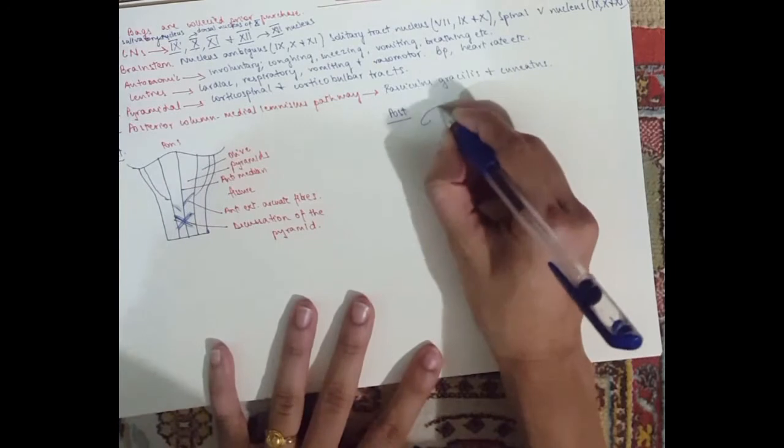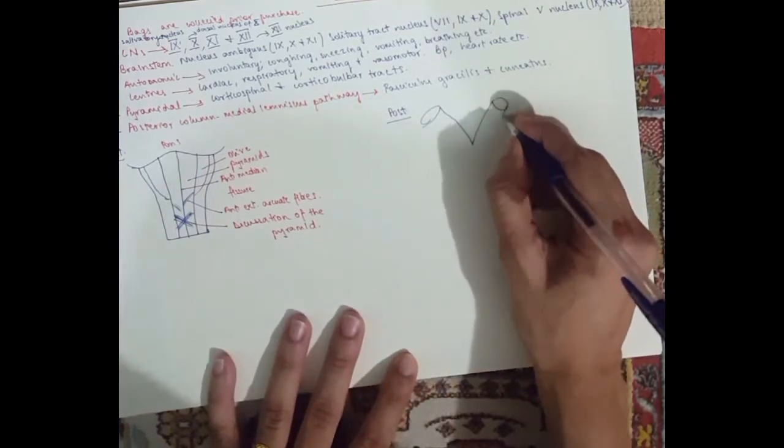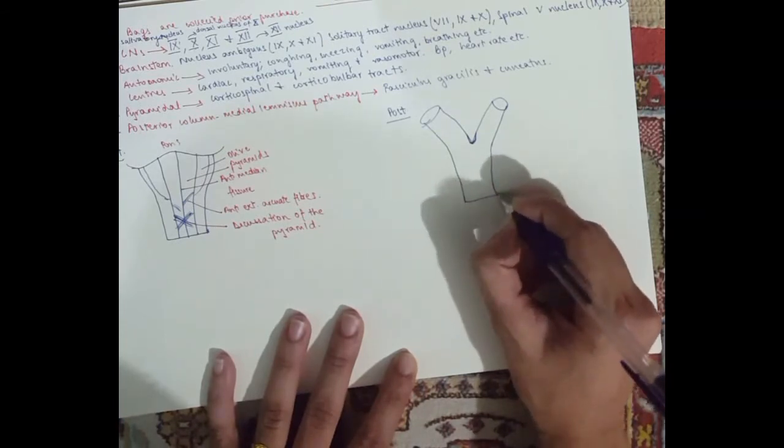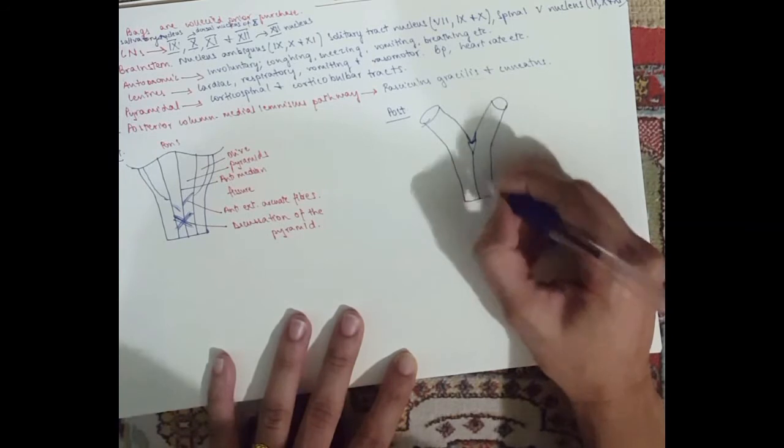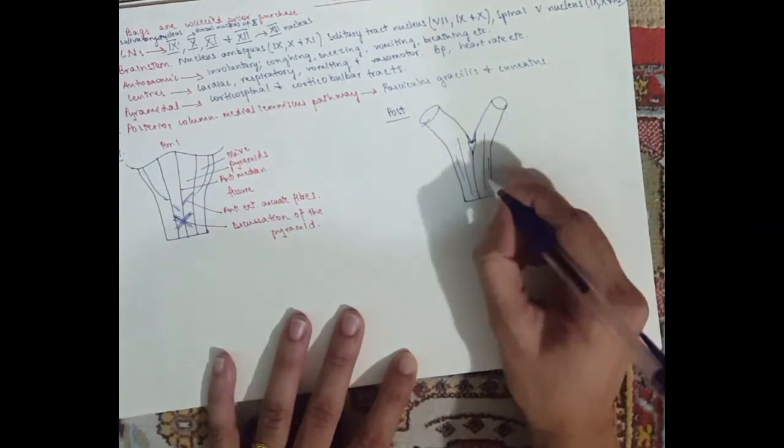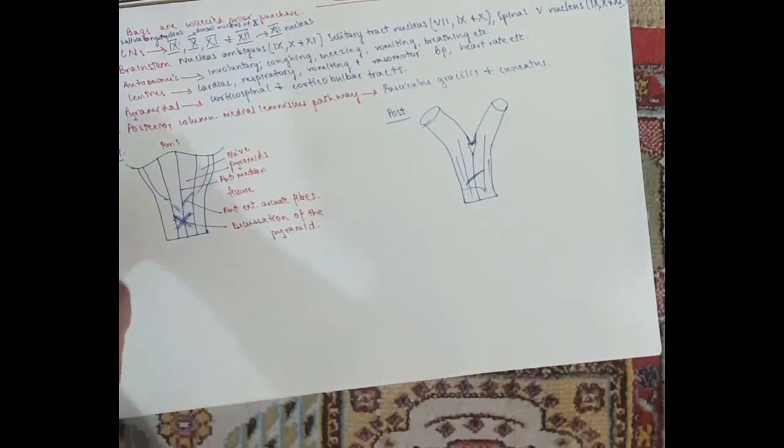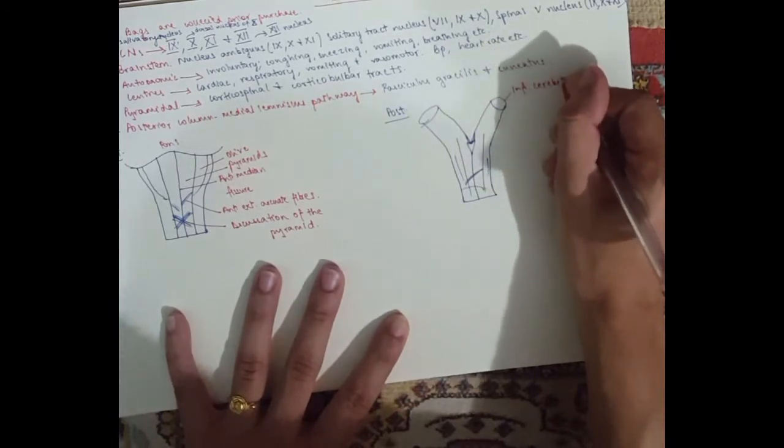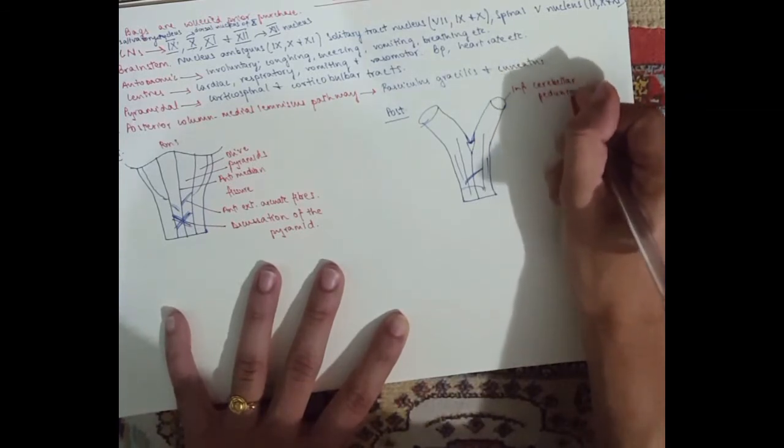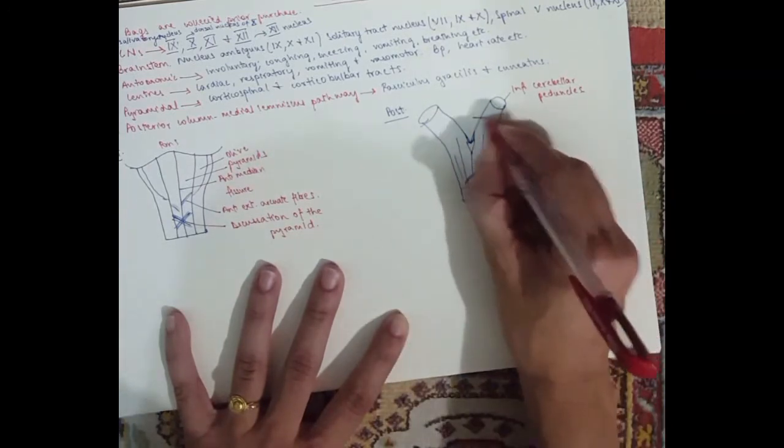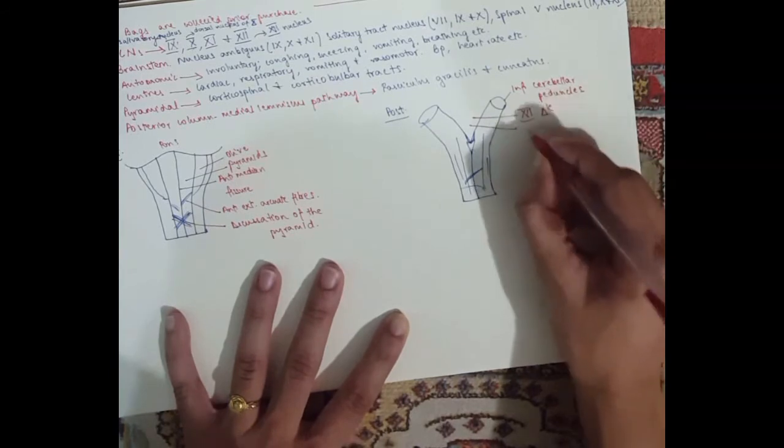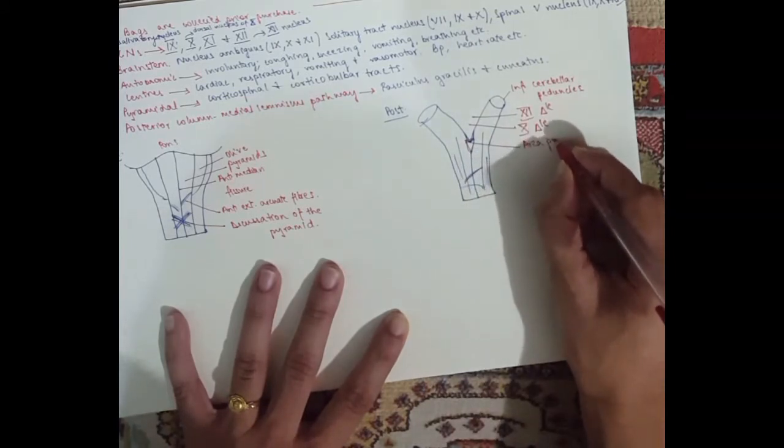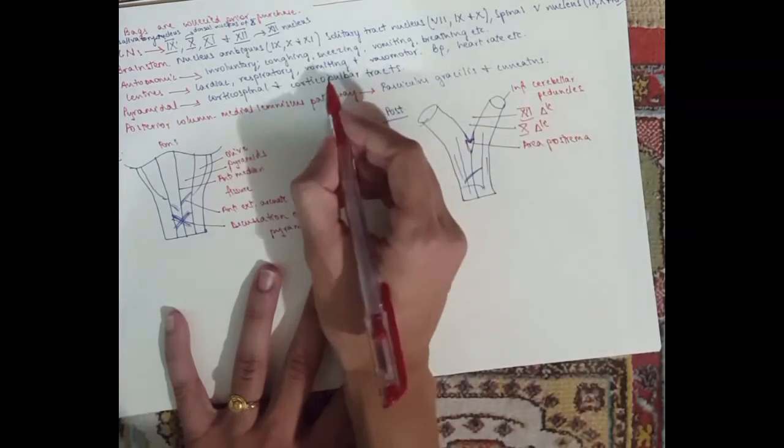Moving on to the posterior view. Draw with me again. So these two are the inferior cerebellar medullary peduncles. They're important because they connect the medulla to the cerebellum. Then you've got two triangles here: the hypoglossal triangle and the vagal triangle. And this area here is the area postrema. That deals with the vomiting function, for nausea and vomiting.